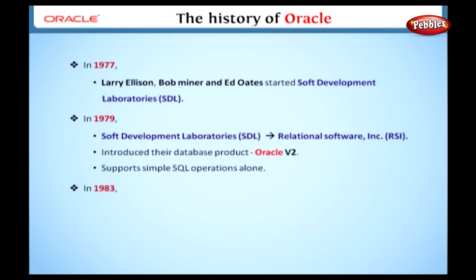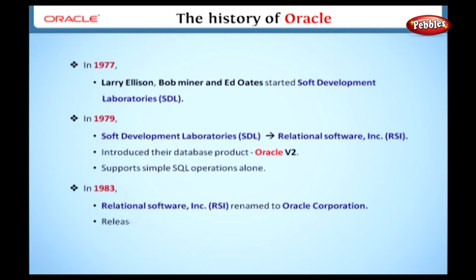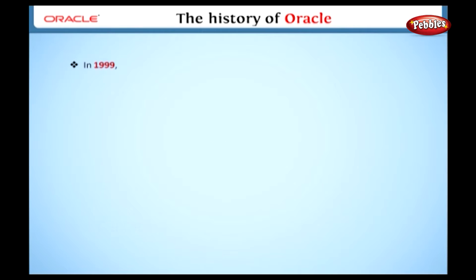After that, in 1983, the company was renamed the Oracle Corporation. Since then, they have released many versions of Oracle Database with various new features. One of the major versions of Oracle Database was released in 1999, having various new features to support Internet applications, such as Oracle 8i.